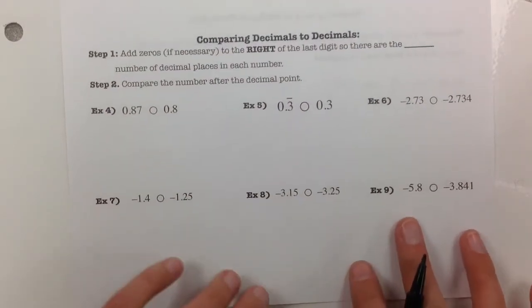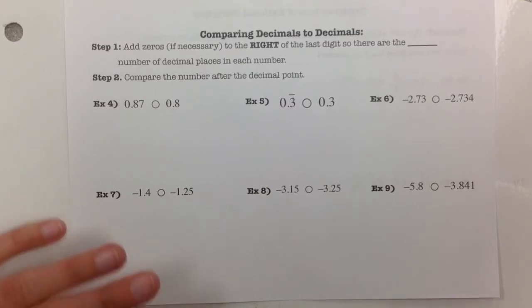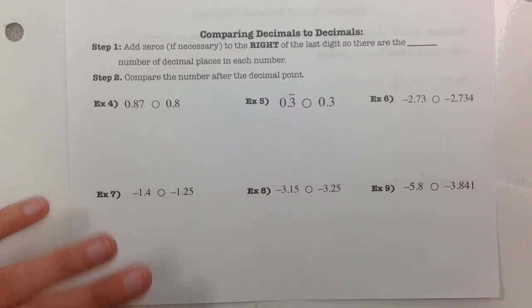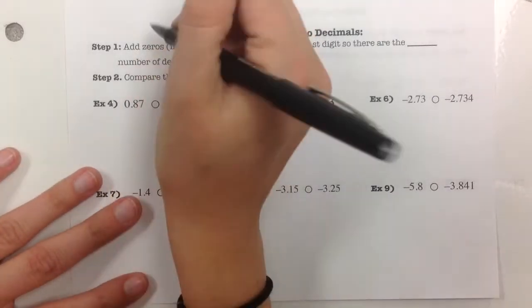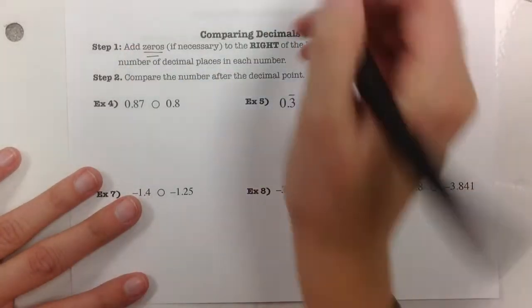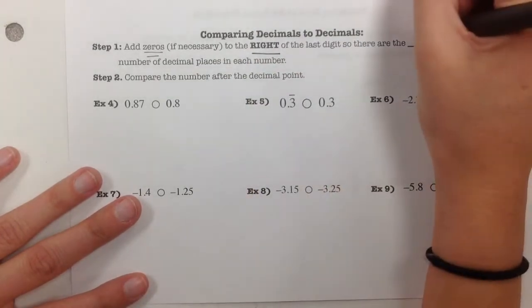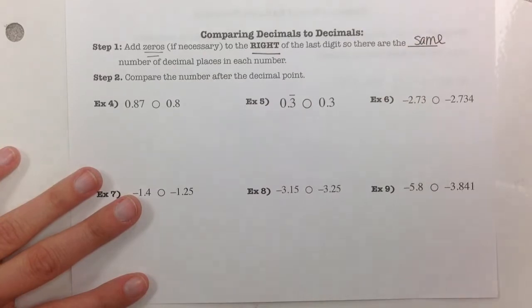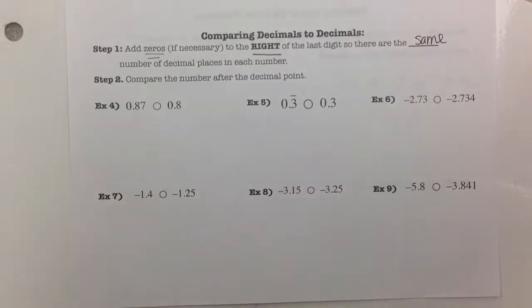Now let's look at comparing decimals to decimals. When comparing decimals, we want to add zeros, if necessary, to the right of the last digit so that there are the same number of decimal places in each number. Then we compare the digits after the decimal point.